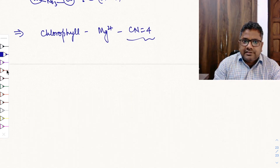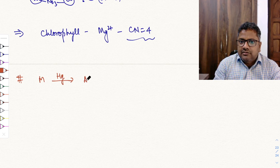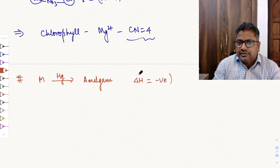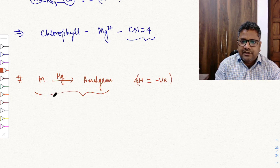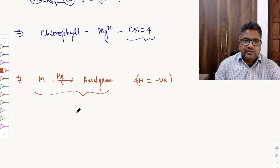All second group metals dissolve in mercury to form amalgams, and this process is highly exothermic (ΔH is negative).